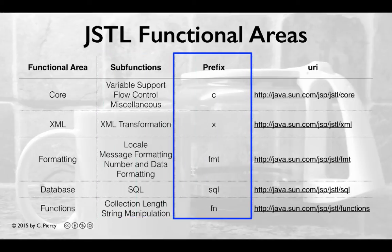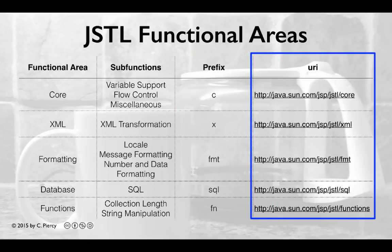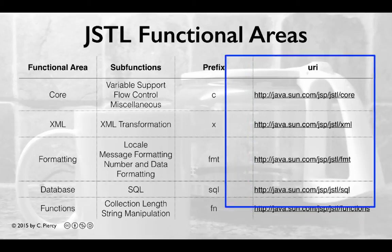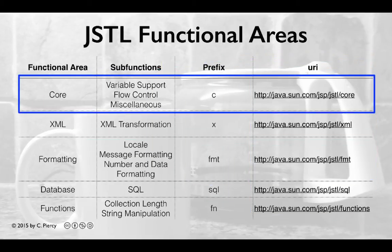Each functional area is indicated by a prefix in each of the JSTL tags. In addition, each functional area has a URI, which is used to let your pages know which part of the JSTL library can be accessed for those tags. The core functional area contains the core tags for common tasks such as flow control. We use the prefix C in each of the JSTL tags that are part of the core.